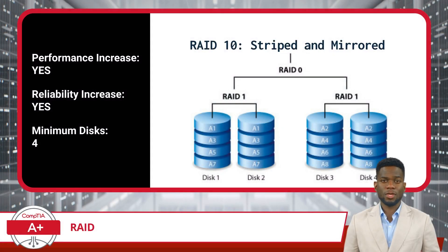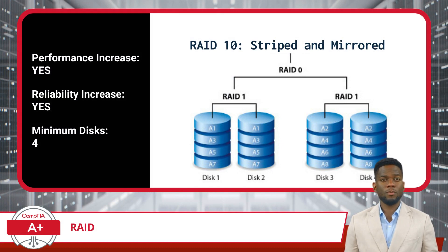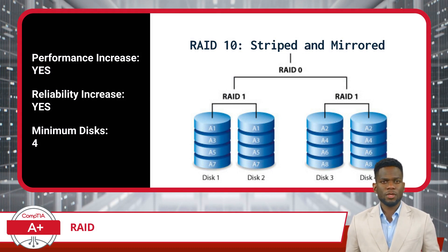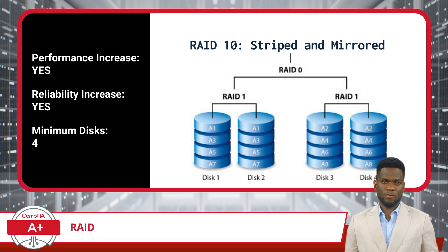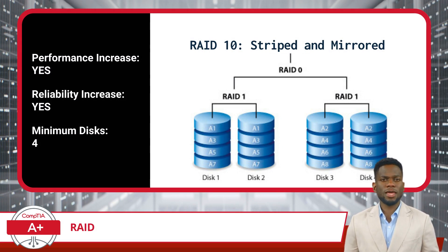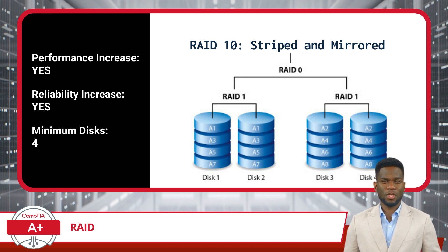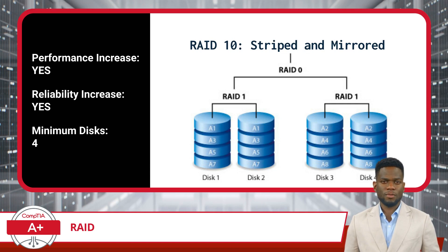Lastly, RAID 10, often referred to as RAID 1 plus 0, merges the striping technique of RAID 0 with the mirroring capabilities of RAID 1. This combination allows RAID 10 to deliver both fast performance and data redundancy. You will, however, need a minimum of four drives for this type of configuration.